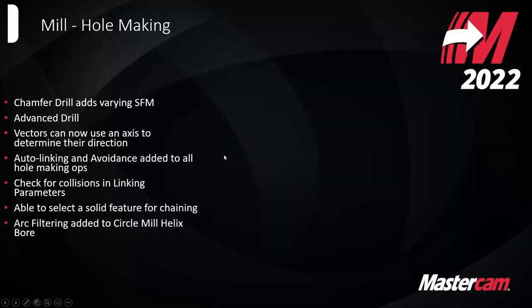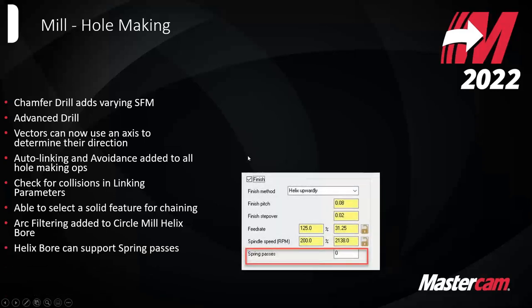Arc filtering was added to circle mill and helix bore. Instead of being on the cut parameters page where it would say 'linearize helix,' that's been moved to the arc filtering page if you want it to linearize the code. You can also now perform spring passes on a helix bore, where before you'd have to copy the operation and turn it to finish only — a small reduction in workflow time.